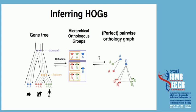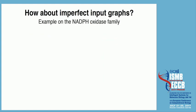We were thinking about ways to go from pairwise orthology directly to the HOGs. We've shown that if you have a perfect input graph, the problem is quite easy — there's a bijection between the connected components for the subgraphs limited to the species in question and the HOGs. The problem is we never have a perfect input graph in bioinformatics.